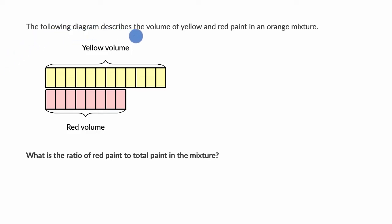We're told that the following diagram describes the volume of yellow and red paint in an orange mixture. So we can see that for every one, two, three, four, five, six, seven, eight, nine, ten, eleven, twelve parts of yellow,